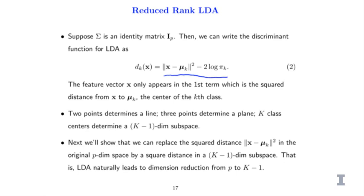The discriminant function — the part relevant to x — is just the distance of x to each of the mu_k's. Since two points determine a one-dimensional line, three points determine a plane, and k class centers determine a k minus one dimensional subspace. We can assume the mean of the mu_k's is the origin, since all we care about is relative distance. So we can always move the origin to the center of the mu_k's, and replace the first term in the original p-dimensional space by a squared distance in that lower-dimensional k minus one dimensional subspace. LDA naturally leads to a dimension reduction from p to k minus one.